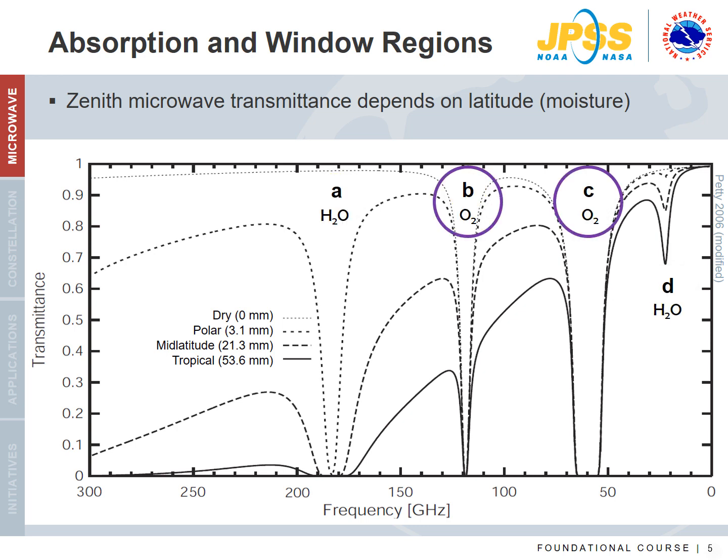Is it what you expected? Regardless of the amount of moisture in the atmosphere, the strong absorption regions where transmittance goes to zero for all spectra are near 60 GHz and 118 GHz. These correspond to oxygen absorption and indicate a well-mixed constituent.